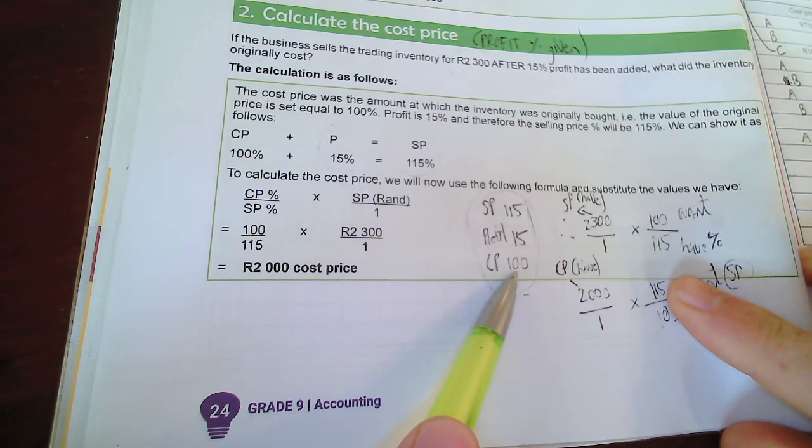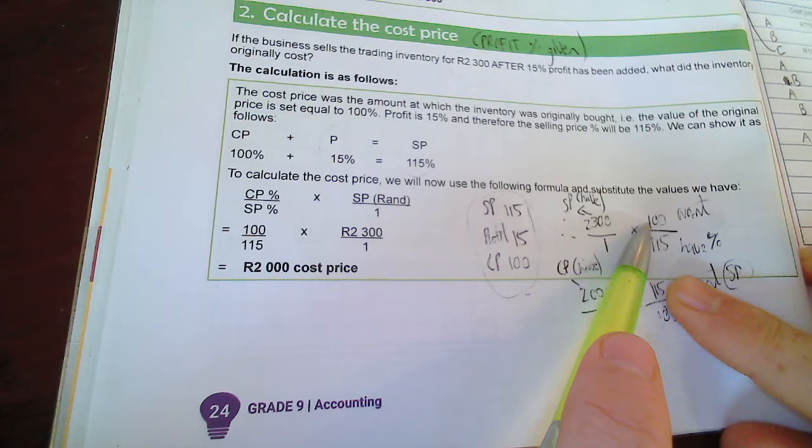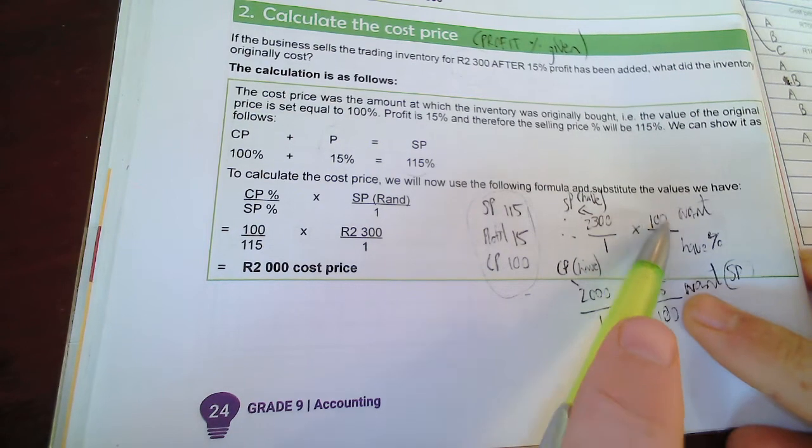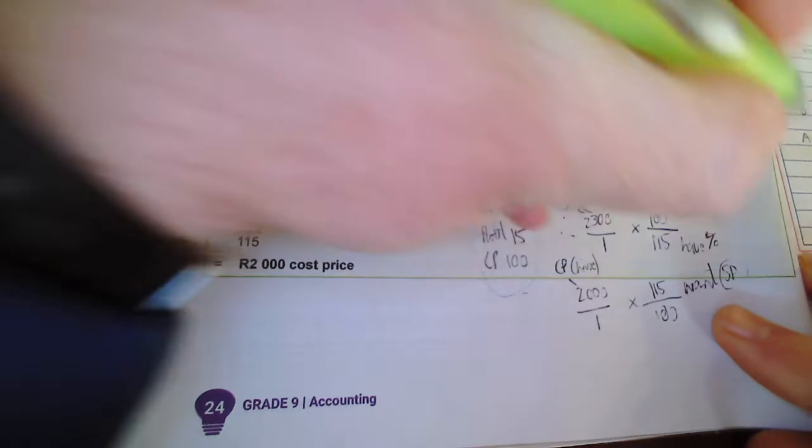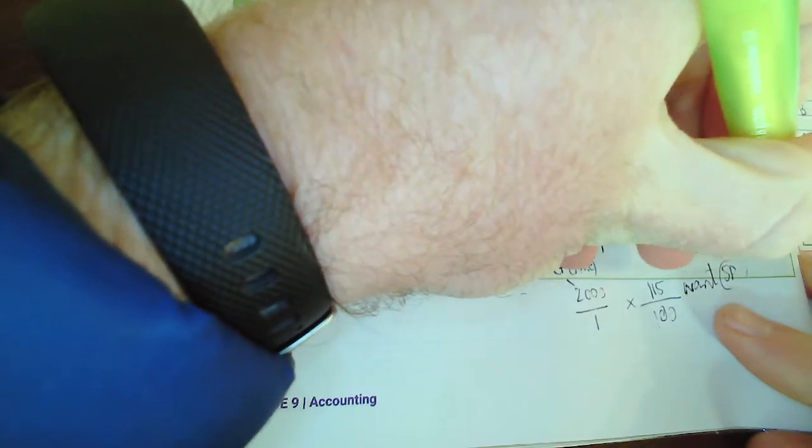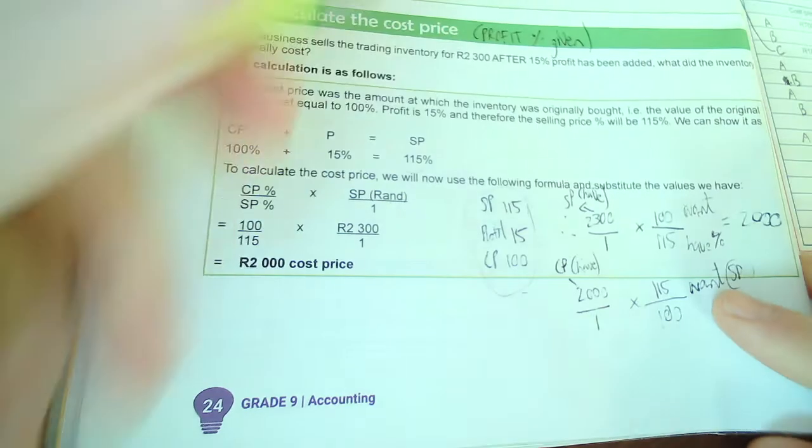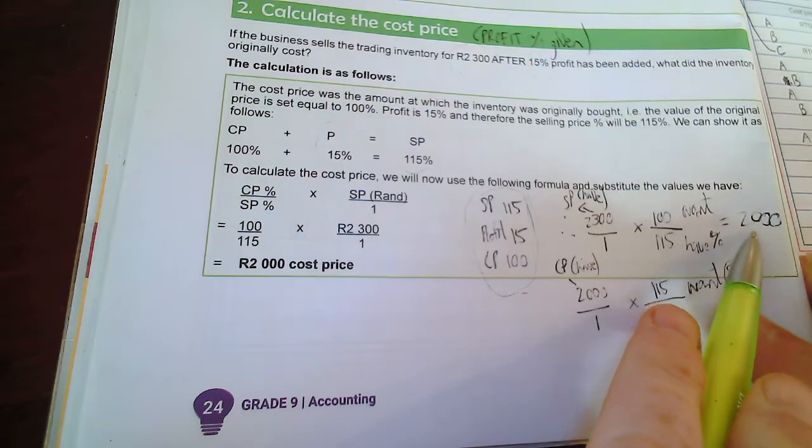So I put 100 at the top. Now if I calculate it, I will get to R2000, and that is the same as the value that we worked out as the cost price at the top.